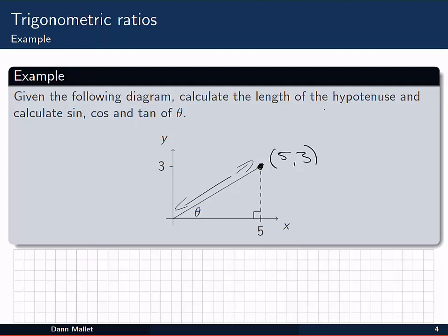Well, the length of the hypotenuse will be easy enough. That's just given by Pythagoras' theorem. The hypotenuse will be equal to the square root of 5 squared plus 3 squared. 5 squared is 25, and 3 squared is 9. So that gives us the square root of 34. And it's perfectly fine to leave it as that, or if you like, you could say that that's approximately equal to 5.8.